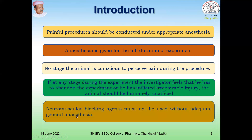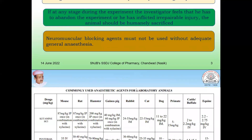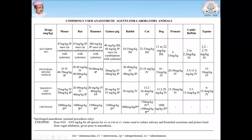Neurovascular blocking agents must not be used without an adequate general anesthetic agent. The commonly used anesthetic agents for laboratory animals include ketamine hydrochloride, pentobarbital sodium, thiopentyl sodium, and urethane.